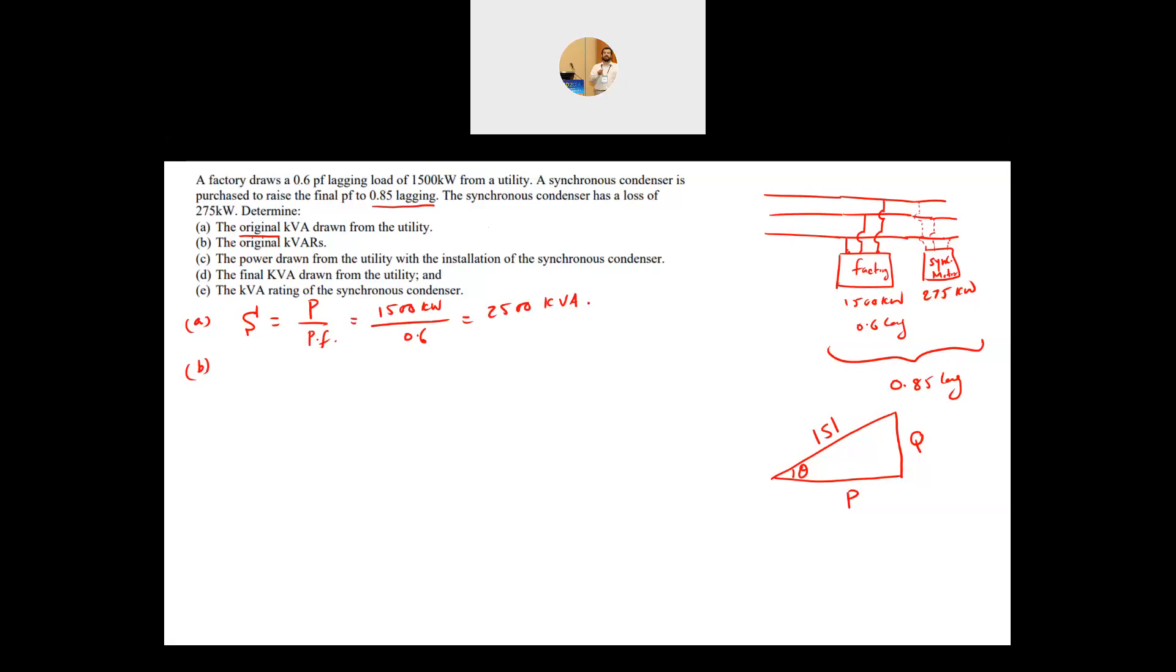The second part, the original kVAR. So what is the Q consumption? Again we know P, we know S, this is a right triangle so your Q is equal to square root of S square minus P square. So this is equal to square root of S square 2500 square minus P square which is 1500 square and this will give me 2000 kVAR. So that is your original kVAR.